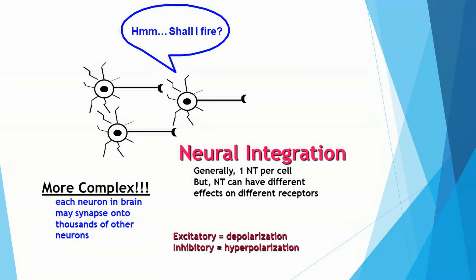I've talked about how one neuron communicates to a second neuron, but if you consider the billions of neurons in your brain, obviously the situation is much more complex.